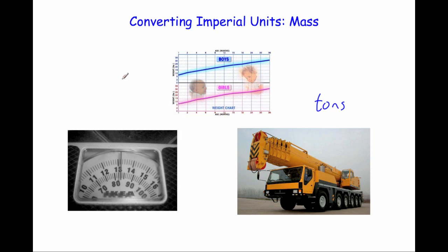Welcome to this video on converting between different imperial units for mass. In the UK we use imperial units for mass in several different situations: the mass of a newborn baby is quite often given in pounds and ounces, our own mass is quite often given in stones and pounds, and the mass of a very large object is quite often given in tons.